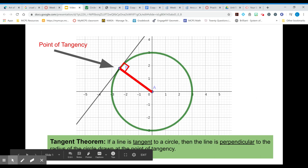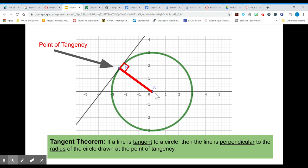In the Desmos activity you learned that a tangent line and a radius drawn to the point of tangency are always perpendicular to one another.